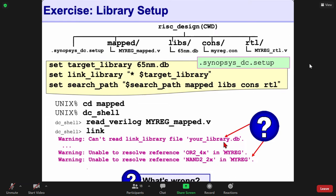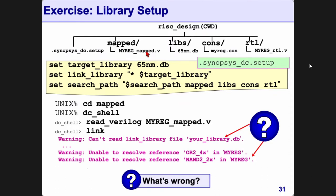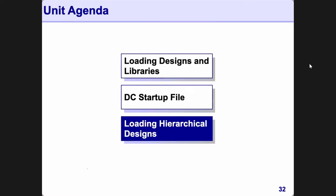This is why you get these warnings. Always invoke DC from the correct directory — that should have been the risk design directory. It doesn't work any other way. You must always invoke DC from the directory where the setup file is located, one fixed location. Each project will have one specific directory where you can invoke DC from.